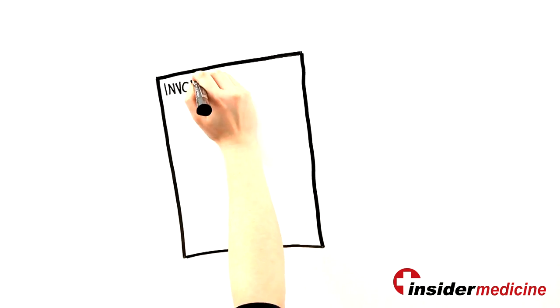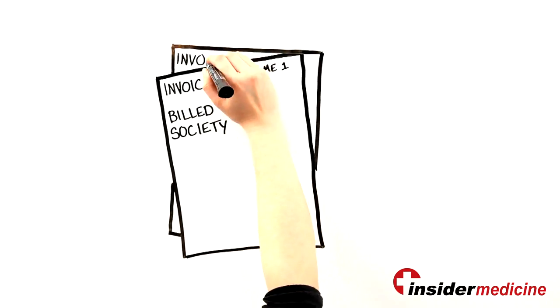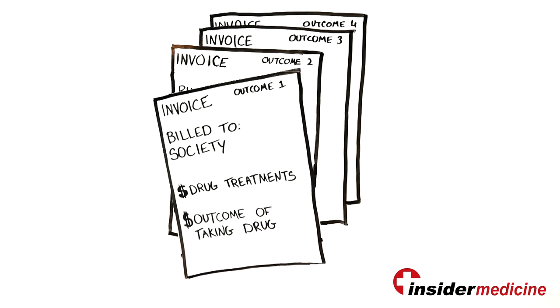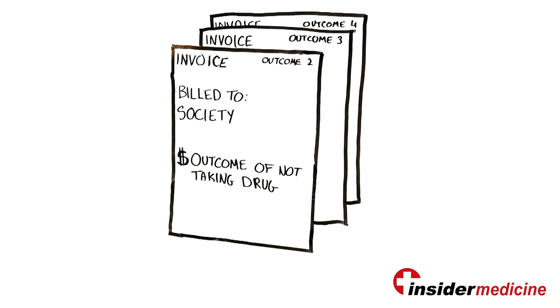The next thing we do is look at the cost to society as a result of each outcome. Most obviously, we have to look at the cost of paying for the drug treatments, but then we also have to take into account the total cost of each possible outcome associated with both receiving the treatment and not receiving the treatment.